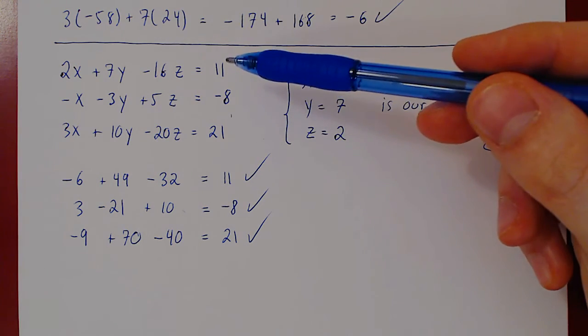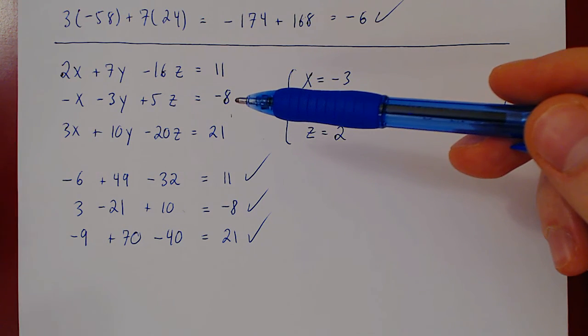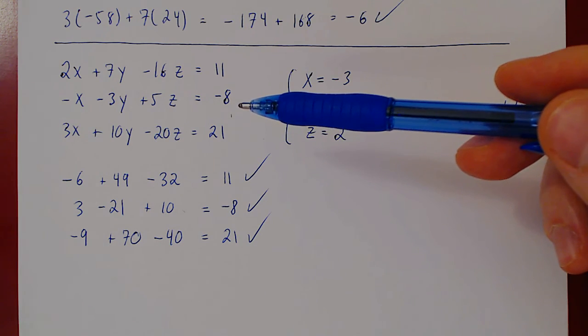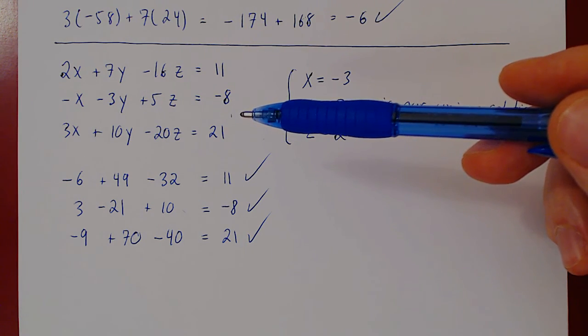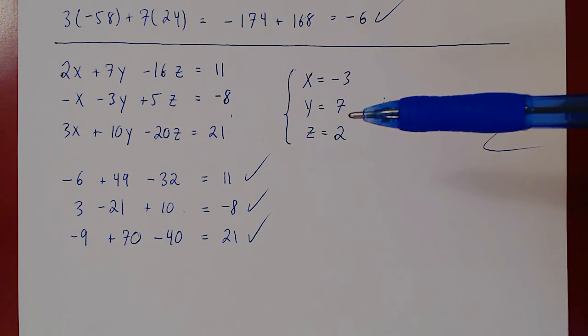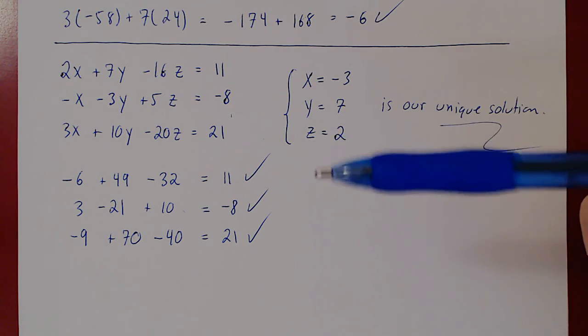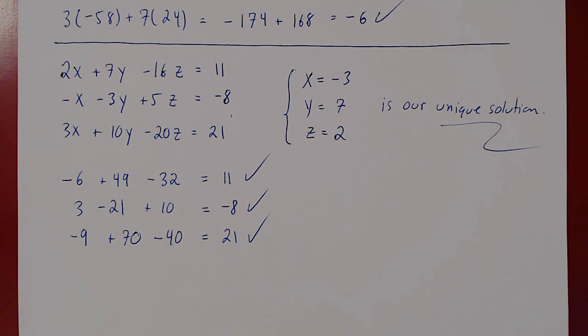So our natural question now is, okay, can we do better when we try to solve these linear systems? And we can do better in two ways. First, if we use good notation, we can save ourselves a ton of writing. Second, if we figure out a clever way of simplifying the systems, then we can save ourselves also a ton of calculations. And this will be the topic of our next few videos.